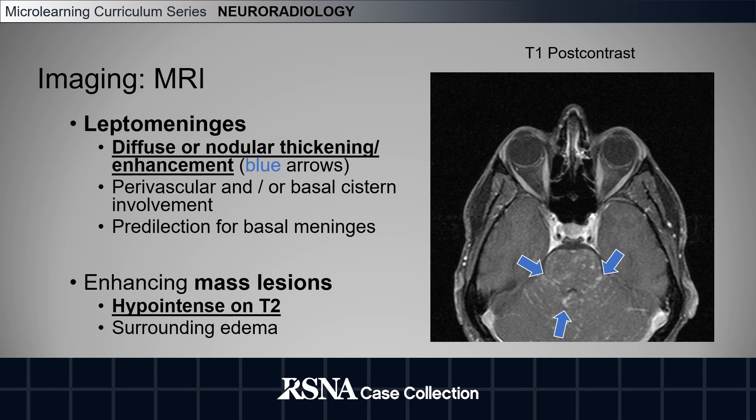Focusing on leptomeningeal involvement, you may see diffuse or nodular thickening and enhancement. Often this involves the perivascular and/or basal cisterns, and there is also a predilection for the basal meninges.